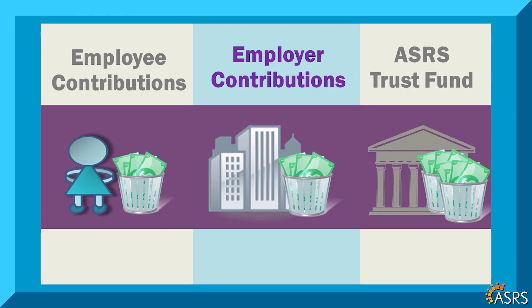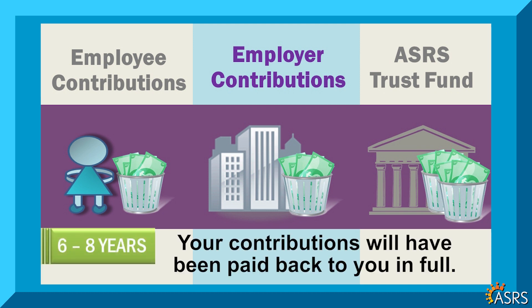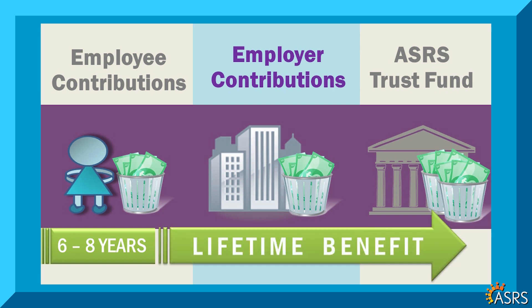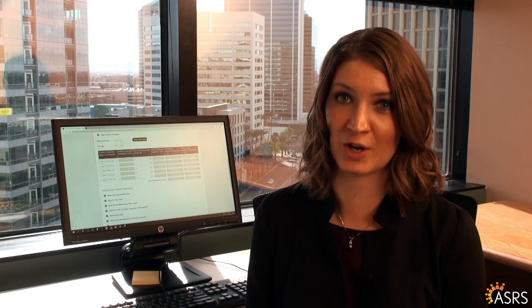When you retire, your pension payments are initially paid out from your contributions. On average, after you have been retired for six to eight years, your contributions will have been paid back to you in full, but you will continue to be paid the same monthly pension for the rest of your life through the ASRS trust fund. If you should pass away before your contributions have been paid back to you, they will be paid to your beneficiary.